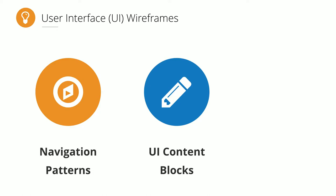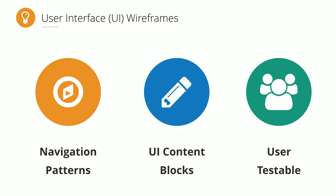The second component is creating UI content blocks — visualizing the content structure for various pages so that content teams and stakeholders can start seeing how pages come together and think about how their content will work. Third, we use software called Axure which creates a functional wireframe prototype — an actual website we can sit in front of users to test these early, crude experiments and get feedback quickly.